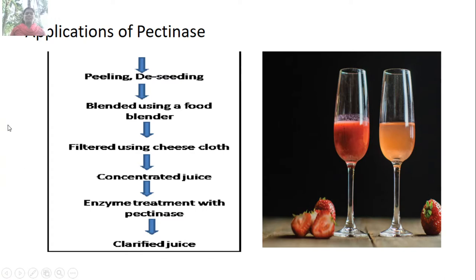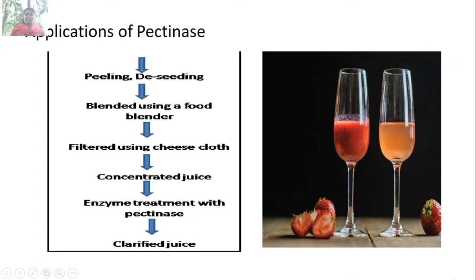Another enzyme is pectinase, used for clarification of juices. When fruits are processed for fruit juice production, after peeling and de-seeding they are blended for color, aroma, and taste. The filtered juice is concentrated and treated with pectinase for clarification. This shows the difference between unclarified juice and clarified juice.